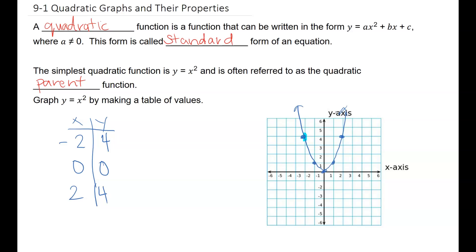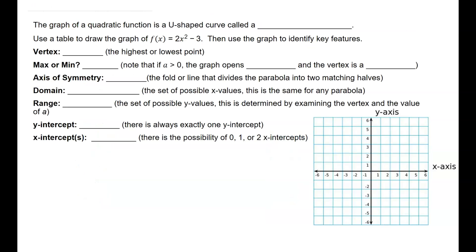The graph of a quadratic function is a U-shaped curve called a parabola. And right there is the key, U-shaped. So I'm not going to want to see any straight lines with this. It's got to have that U-shaped curve.